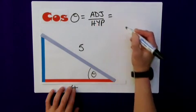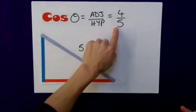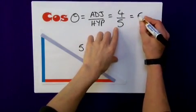which is equal to 4 over 5. So the decimal is equal to 0.8.